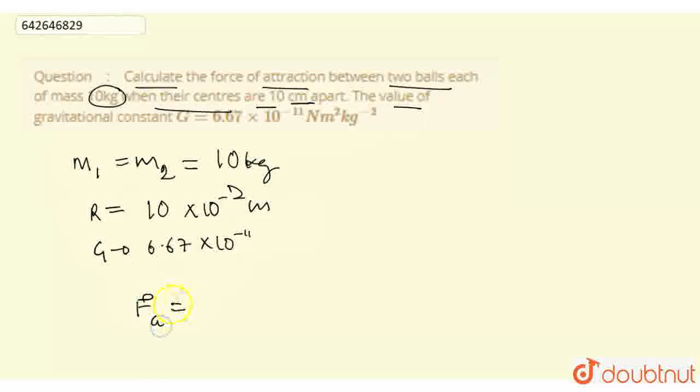Gravitational force is the force of attraction. This is the value of G times M1 times M2 divided by capital R square. We put the values.